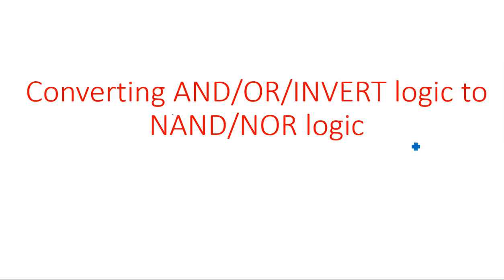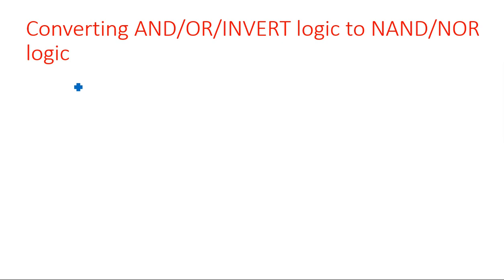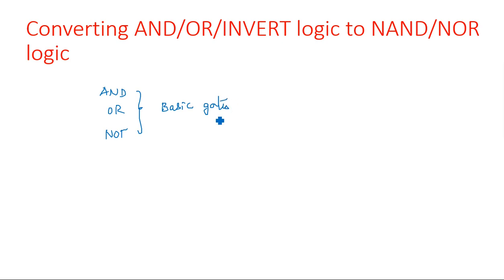In this video, I'm going to explain how to convert an AND gate or OR gate into NAND gate or NOR gate logic. In general, any boolean expression can be implemented with AND gate, OR gate, and NOT gate, which are nothing but basic gates. The circuit implemented with these three gates can be converted entirely into NAND gates or entirely into NOR gates.